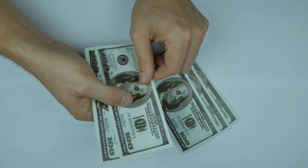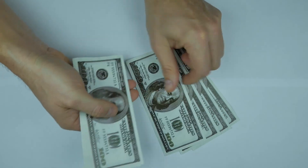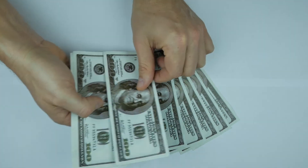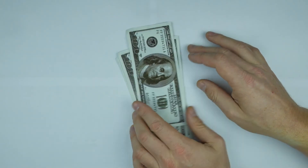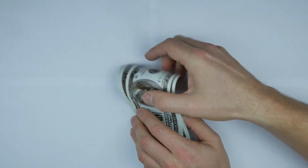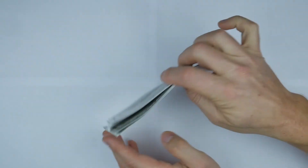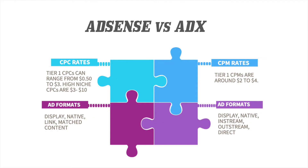The revenue share for AdSense is 68/32 — publishers retain 68% of the revenue and AdSense takes 32%. For Google AdX, the split is 80/20, meaning AdX gives 80% to publishers and keeps 20% for themselves.